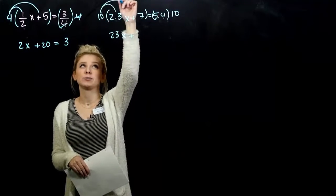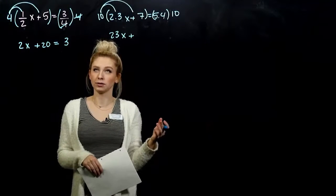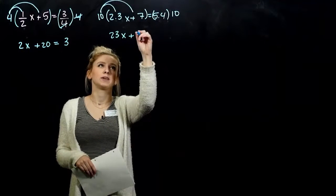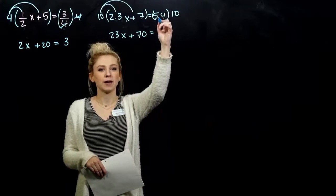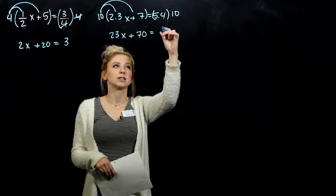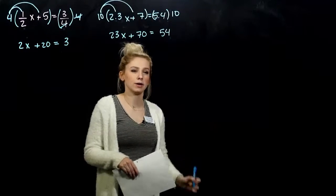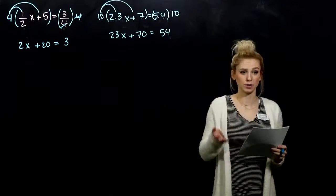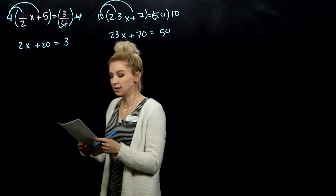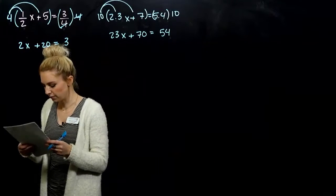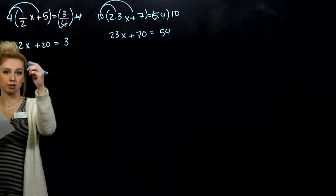We can't forget to distribute to the other terms that are involved. So 10 times 7 will give me 70. And on the right, again, multiplying by a factor of 10 moves the decimal point 1 to the right. So now, again, we're dealing with whole numbers, which generally we're more comfortable with, less likely to make mistakes with. So the first equation was cleared of fractions, and the second cleared of decimals.